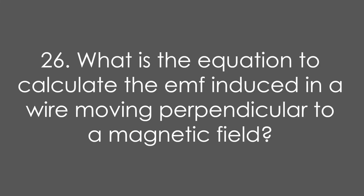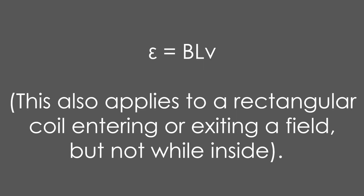Question 26: What is the equation to calculate the EMF induced in a wire moving perpendicular to a magnetic field? It's EMF = BLv. Note that this also applies to a rectangular coil entering or exiting a field — we have a constant EMF at those points, but not when the coil is completely inside.